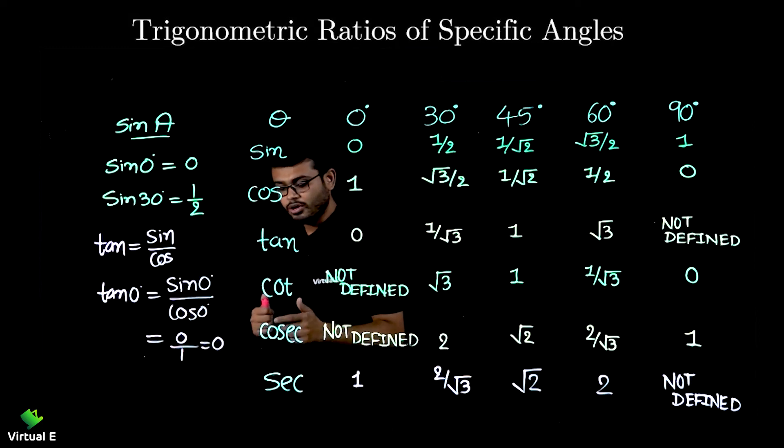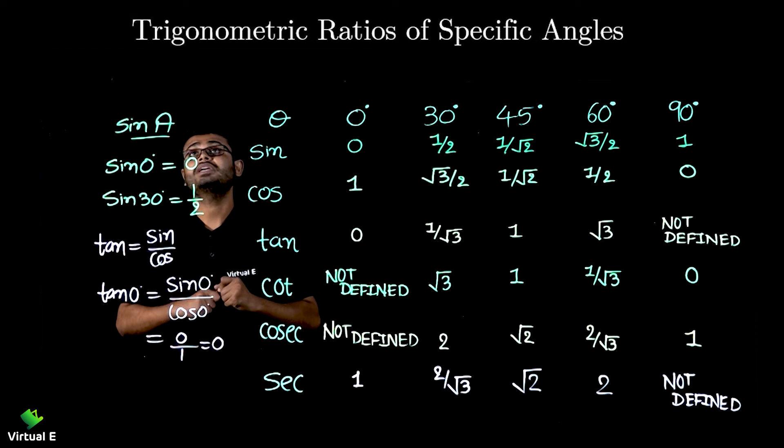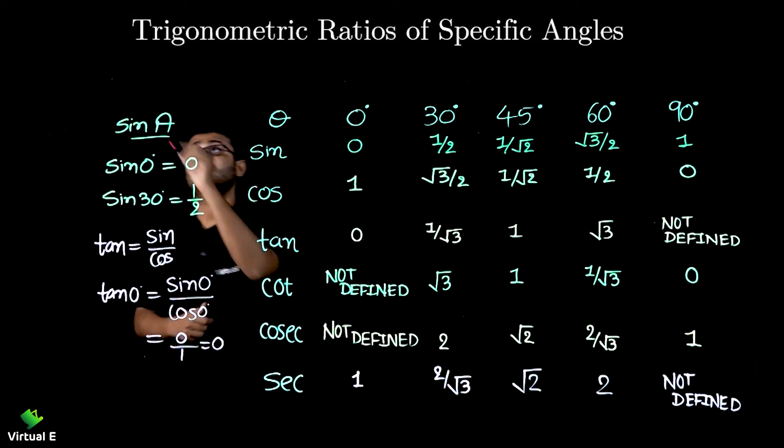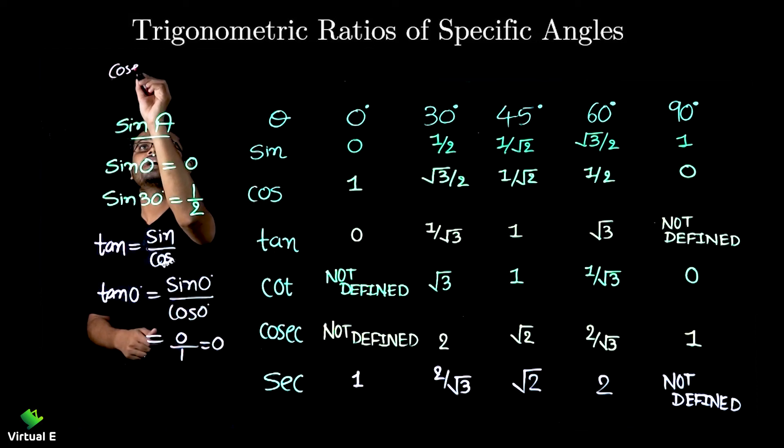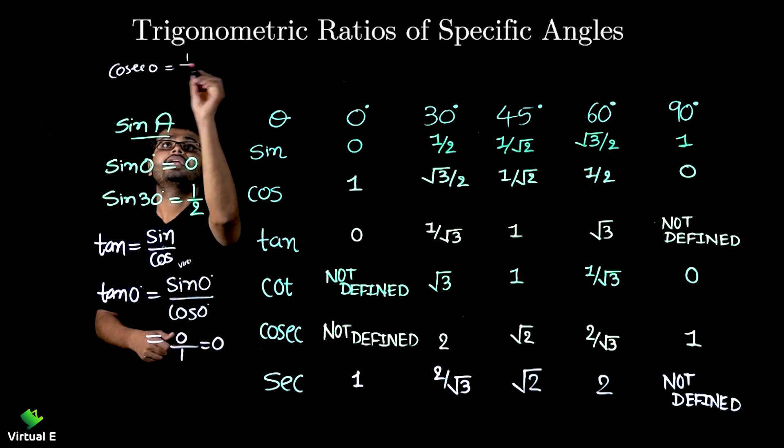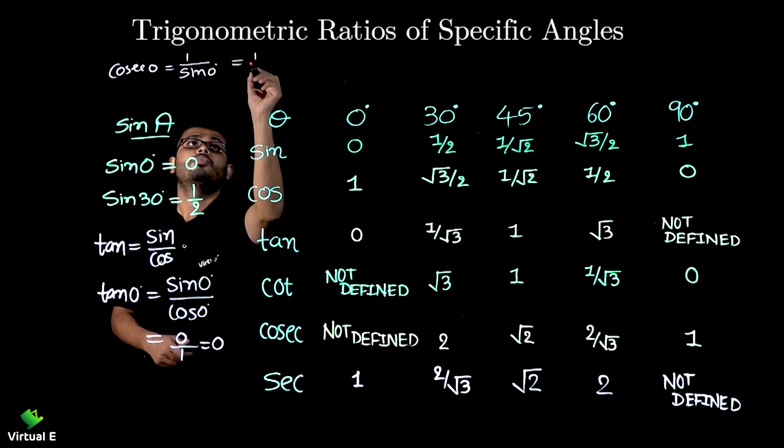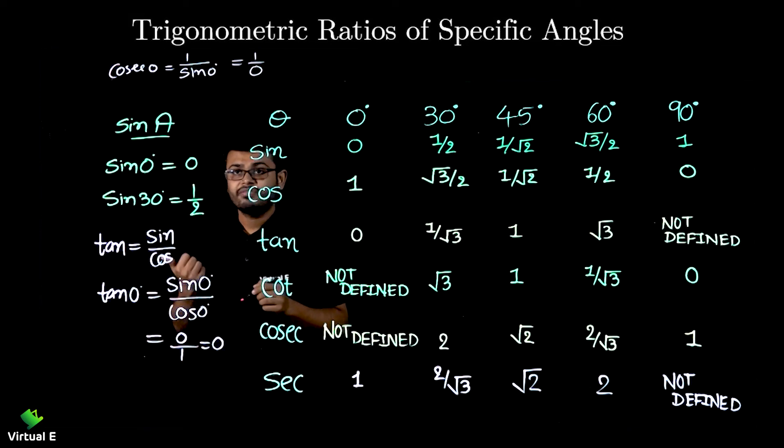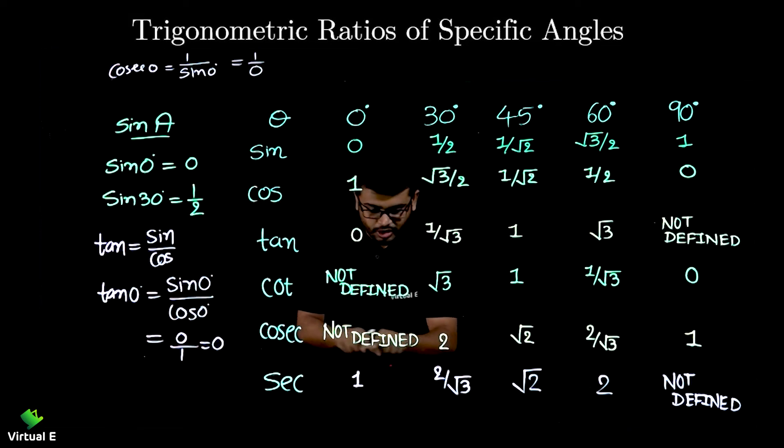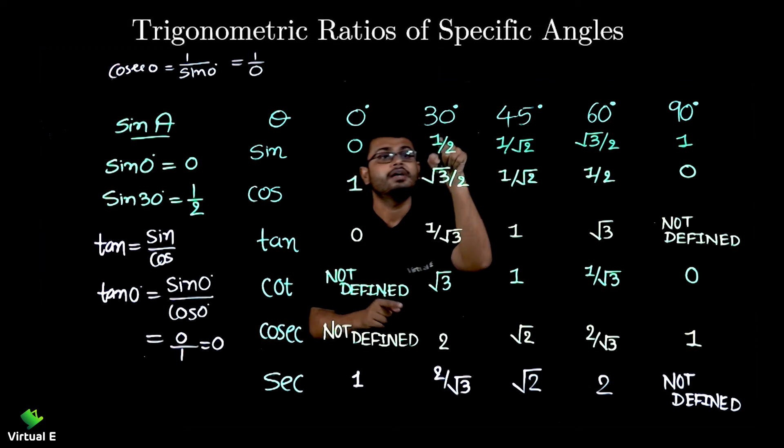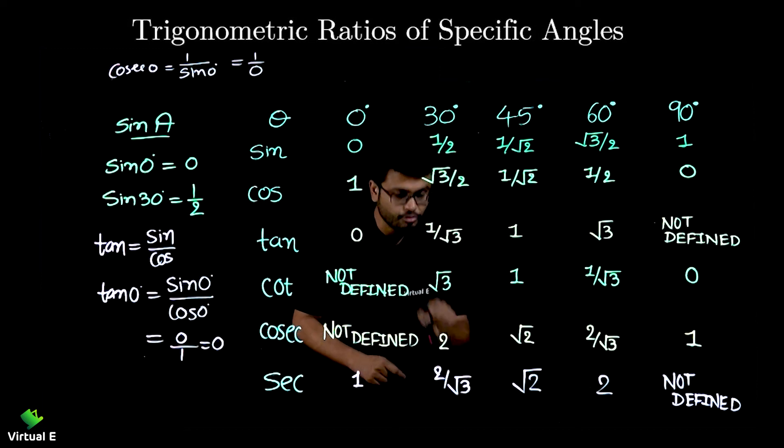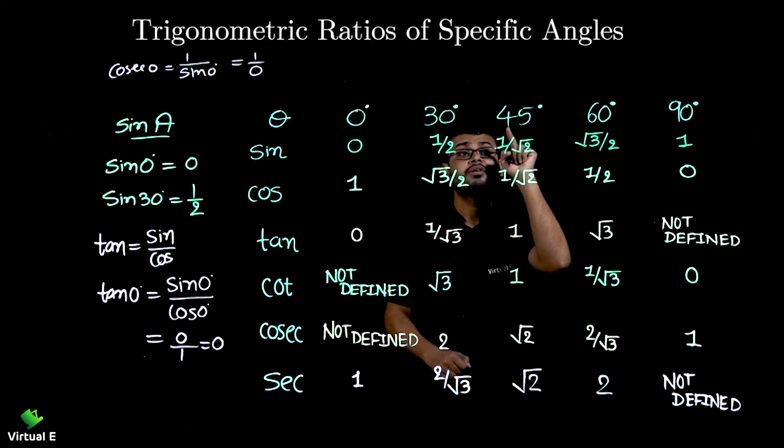Now cosec, we know that is the reciprocal of sine. So to get the cosec 0, I need to do 1 over sine 0 degree. So 1 over 0, it is not defined. Reciprocal of 1 by 2 is 2. Reciprocal of 1 by root 2 is root 2.